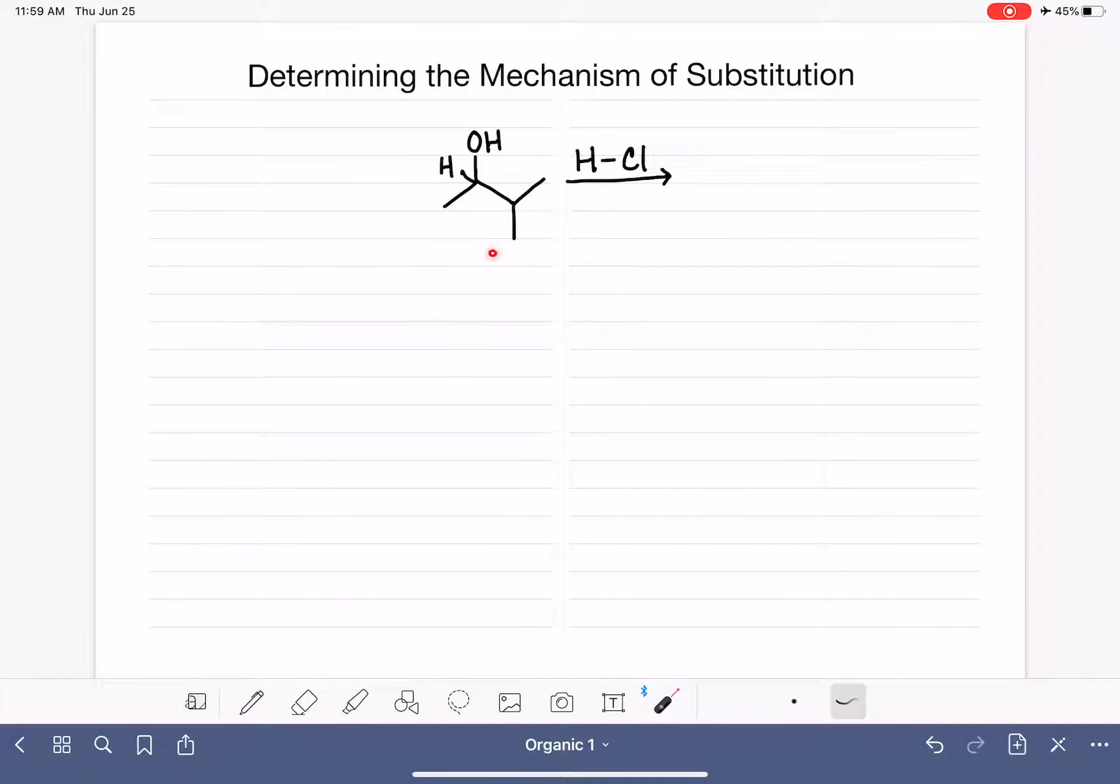When we're looking at a substitution reaction, it's important that we are able to accurately predict which mechanism the substitution reaction will take. For example, we need to be able to predict if a substitution reaction is going to proceed via SN2 or SN1.